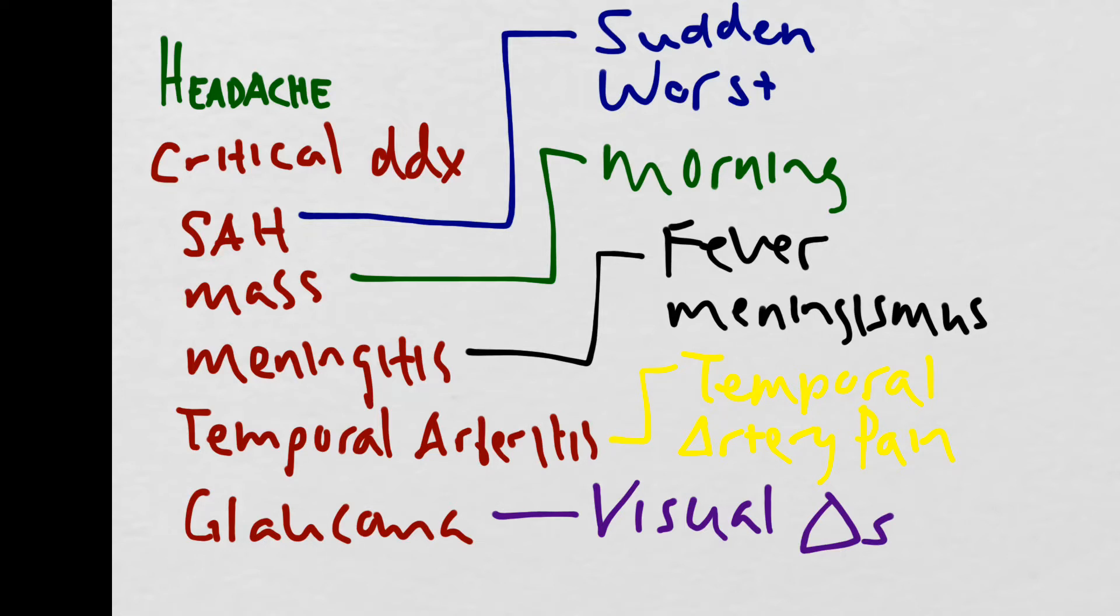Notice on our critical differential diagnosis, we did not include migraines. Migraines are a diagnosis that should be made by a neurologist. If your patient presents with a headache and says that they have a history of a migraine, you want to dig deeper and find out who actually diagnosed them. If it's not a neurologist, you want to be a little skeptical.